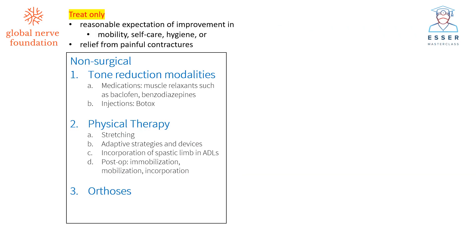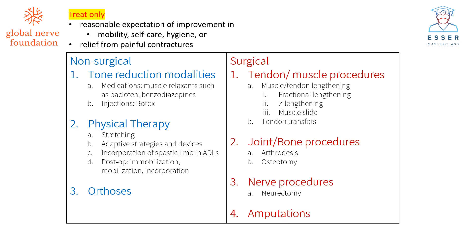Our treatment modalities are applied to patients with a good expectation of improvement and also to relieve contractures. Non-surgical methods include splinting, oral medication, and physical therapy. We use Botox mainly for assessment as a therapeutic trial to see whether patients feel better with muscle relaxation prior to performing neurectomies. Surgical options include deformity correction with tendon and muscle procedures, arthrodesis for stabilization, selective neurectomy in early and selected cases, and occasionally amputation.